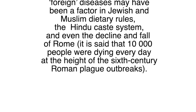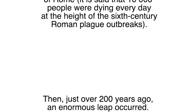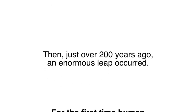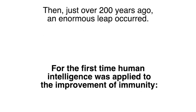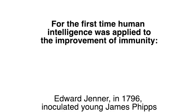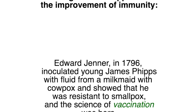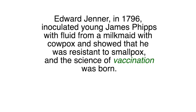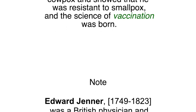It is said that 10,000 people were dying every day at the height of the 6th-century Roman plague outbreaks. Then, just over 200 years ago, an enormous leap occurred — for the first time, human intelligence was applied to the improvement of immunity. Edward Jenner in 1796 inoculated young James Phipps with fluid from a milkmaid with cowpox and showed that he was resistant to smallpox, and the science of vaccination was born.